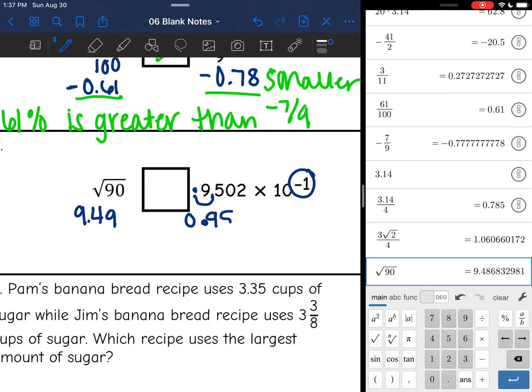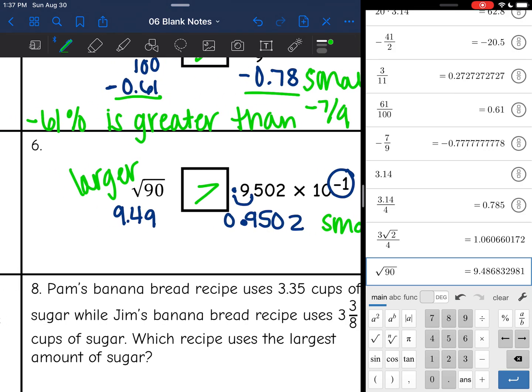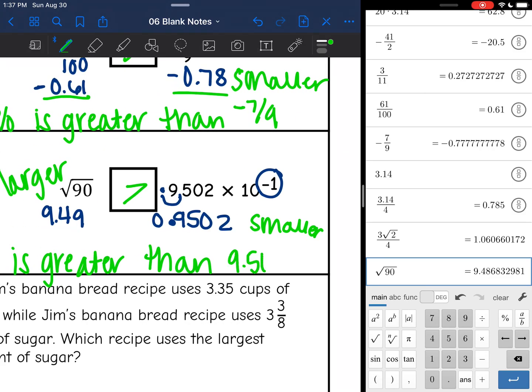Now that they're in decimals, it's super easy to tell. This is the larger number, and 0.9502 is the smaller number. So I would have the greater than symbol there. So it would read square root of 90 is greater than 9.502 times 10 to the negative 1.